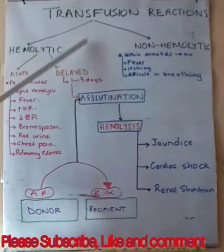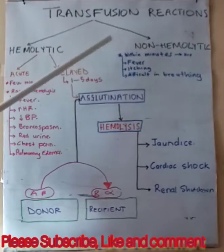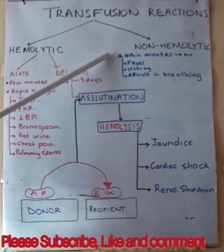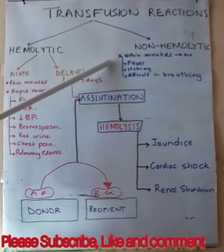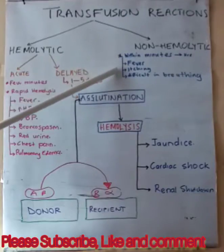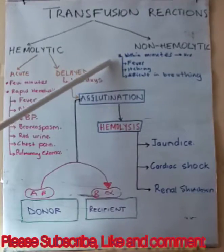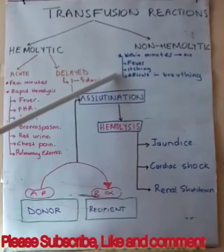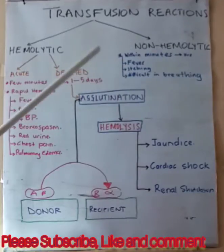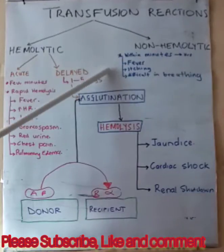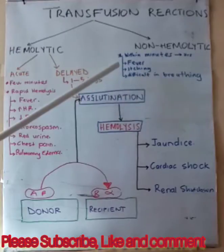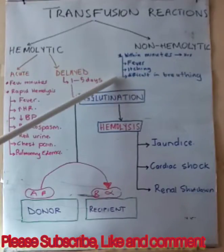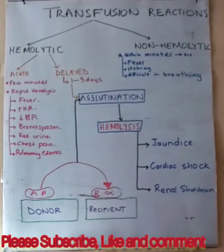Let's start with the easier one — non-hemolytic. This can be seen within a few minutes to hours after blood transfusion, and it is characterized by fever, itching, and difficulty in breathing.